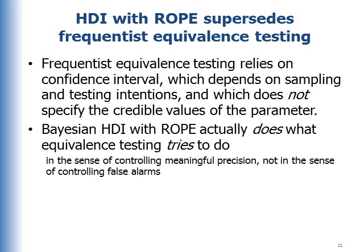The HDI with ROPE supersedes frequentist equivalence testing. Frequentist equivalence testing relies on the confidence interval, which depends on sampling and testing intentions and does not specify the credible values of the parameter. The Bayesian HDI with the ROPE actually does what equivalence testing tries to do in the sense of controlling meaningful precision, not in the sense of controlling false alarms.